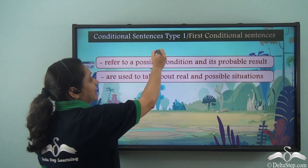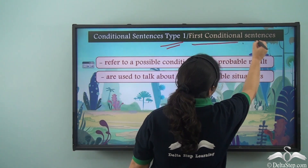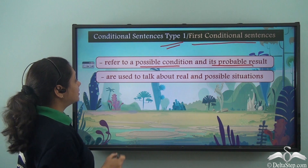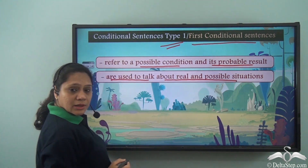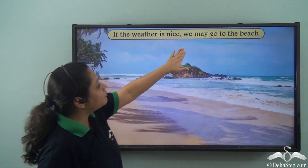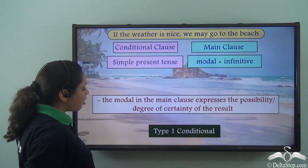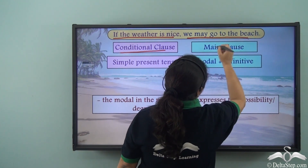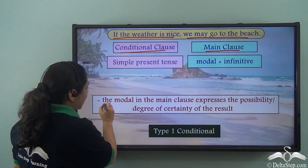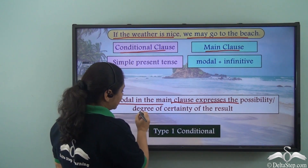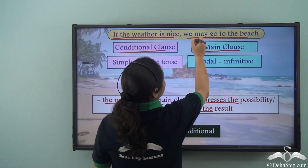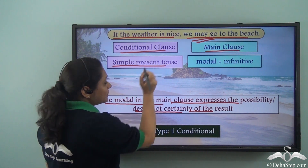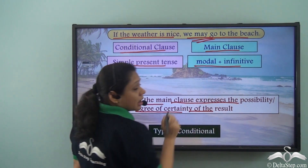Type 1 conditionals are also known as first conditional sentences. They refer to a possible condition and its probable result in the future, and are used to talk about real and possible situations. For example: 'If the weather is nice, we may go to the beach.' Here the conditional clause is in the simple present tense, and the main clause has a modal — 'may' — along with a bare infinitive.